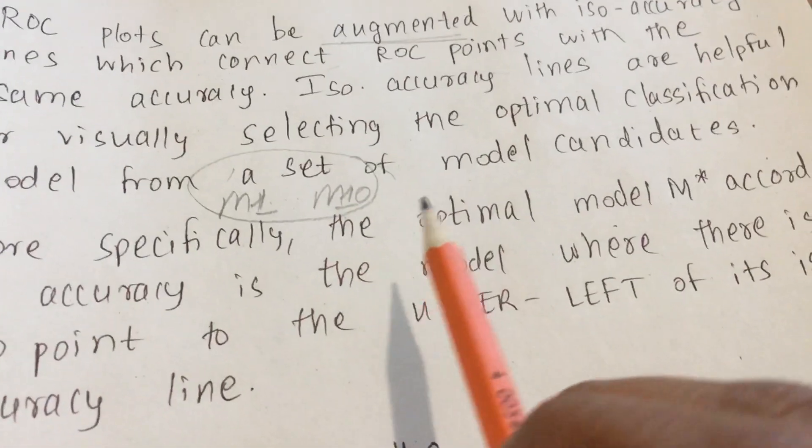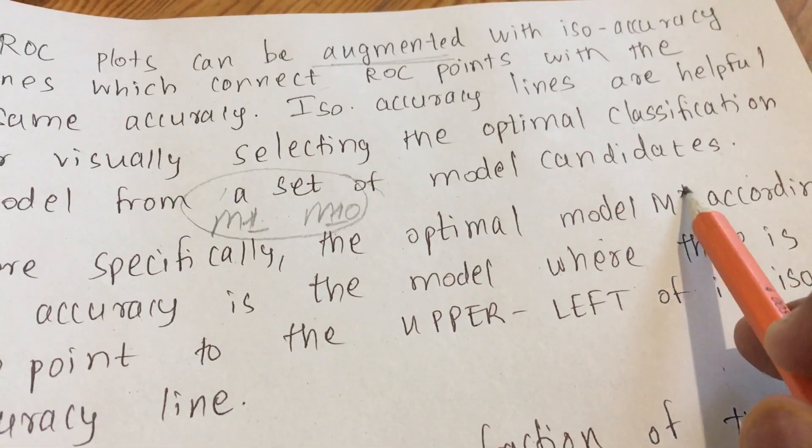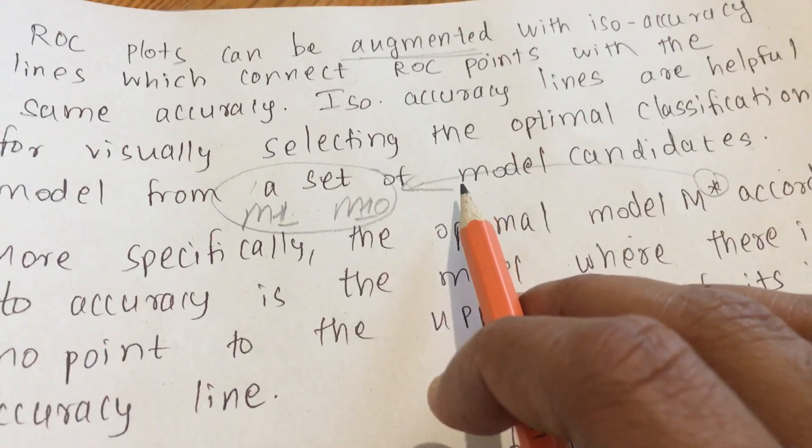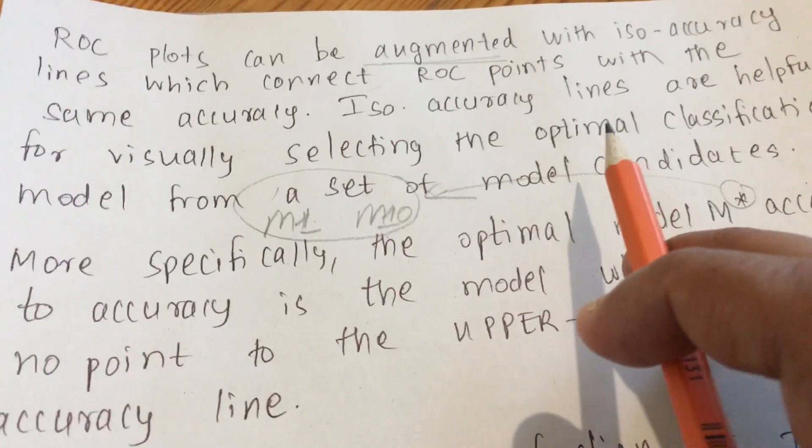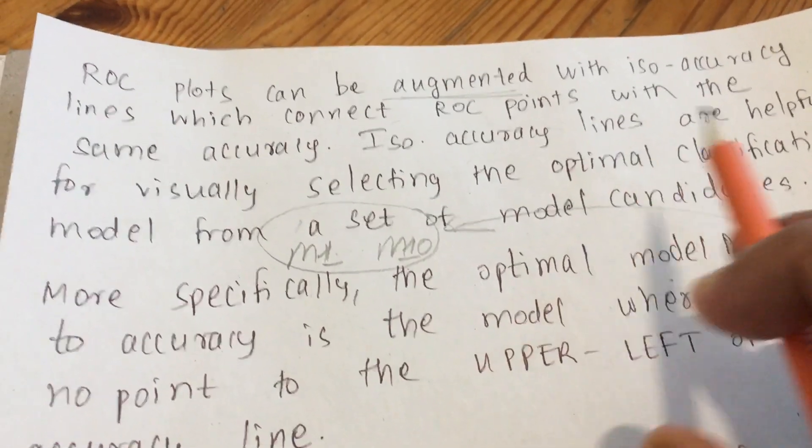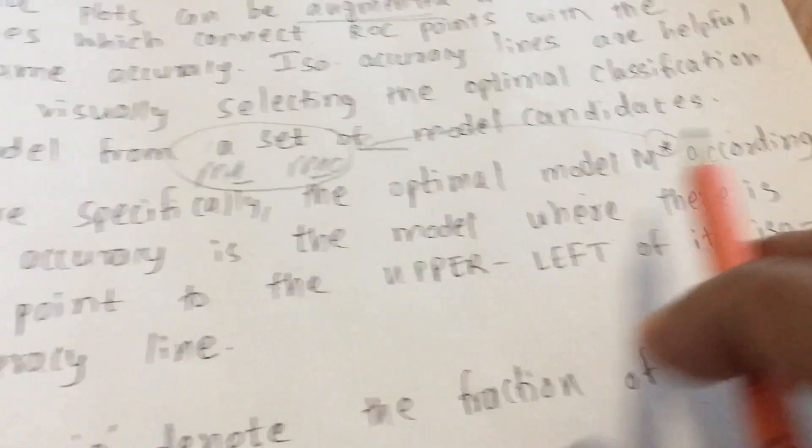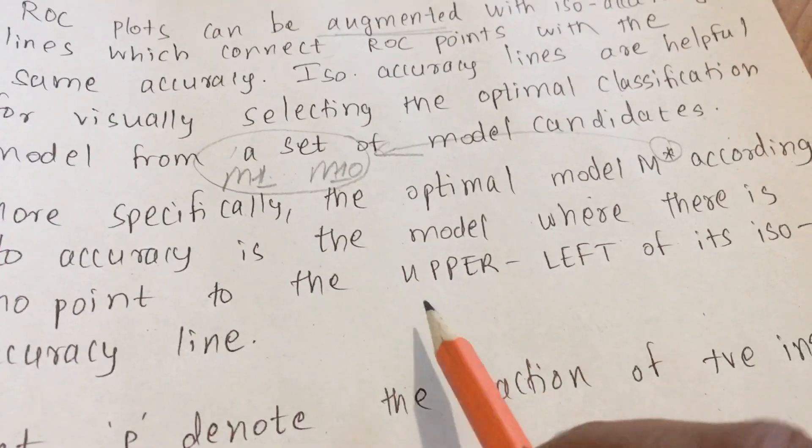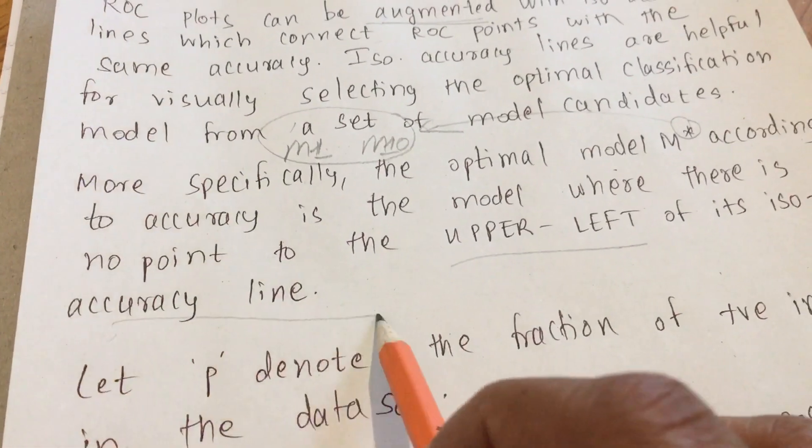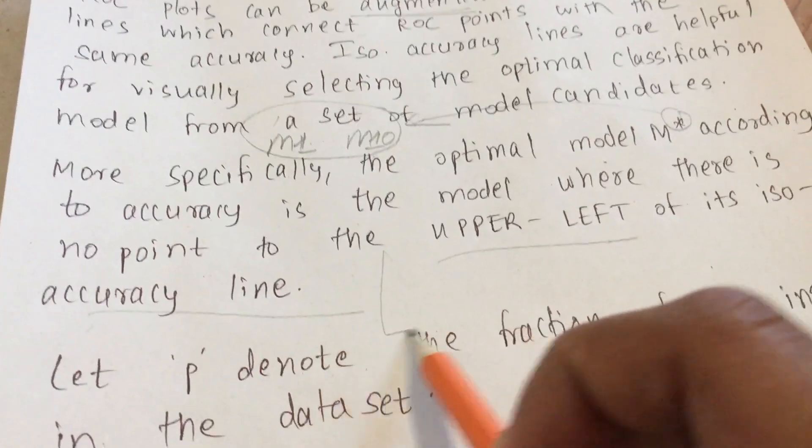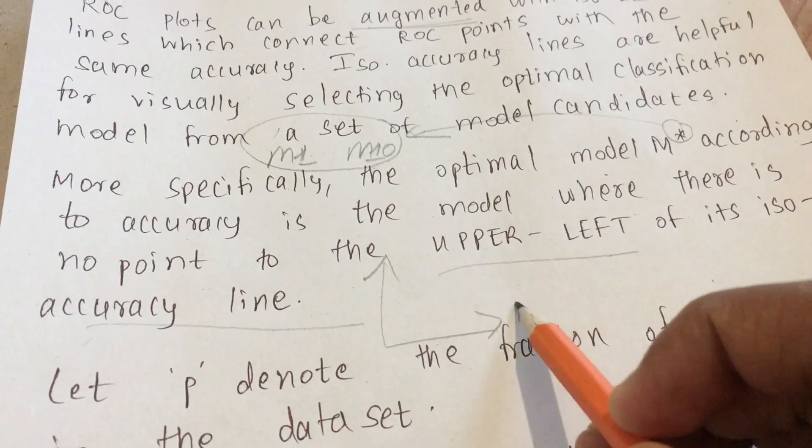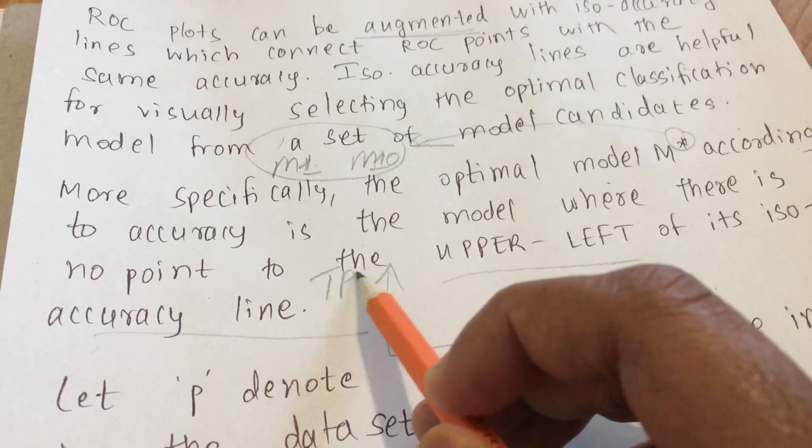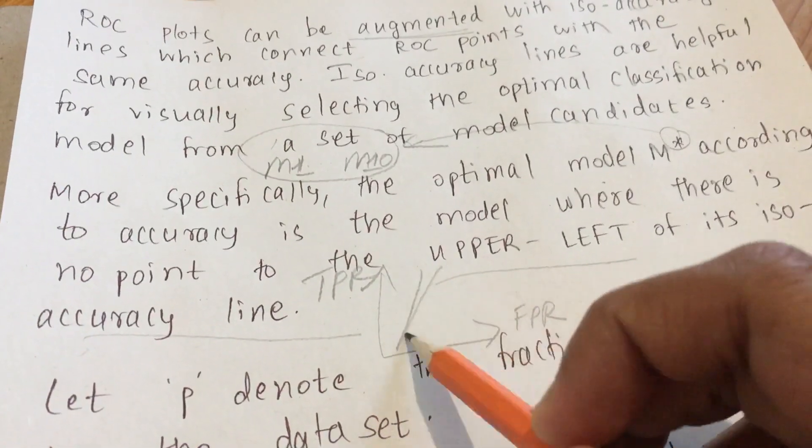More specifically, the optimal model, that is M star - here M star refers to n number of models, like M1 to M5 or M10 and M30. To calculate the accuracy, the model where there is no point to the upper left of its iso-accuracy line. You have some curves like this: on the x-axis you have FPR and on the y-axis you have the TPR.